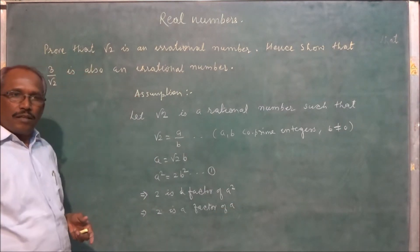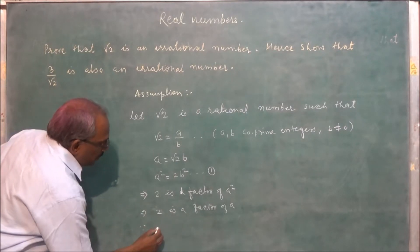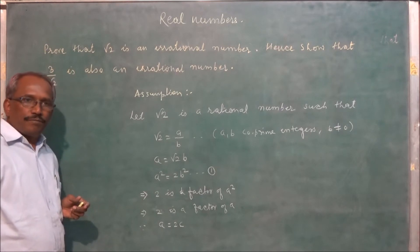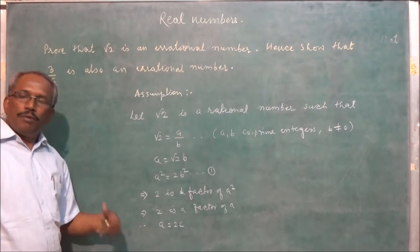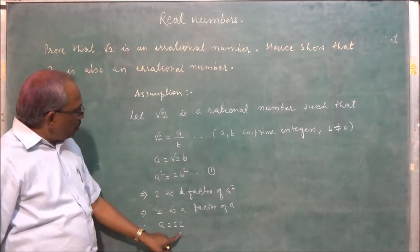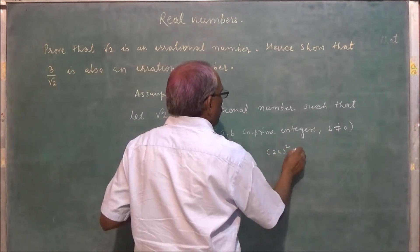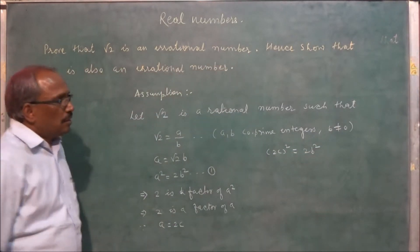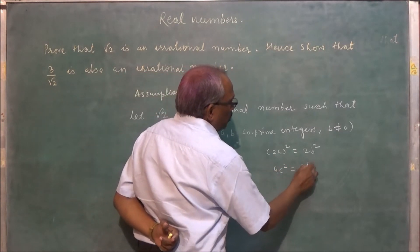So therefore, a can be written as a is equal to 2c — so a is a multiple of 2. So putting a equal to 2c, we get 2c squared is equal to 2b squared, so 4c squared is equal to 2b squared.